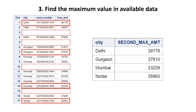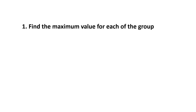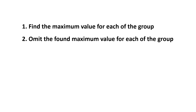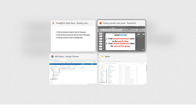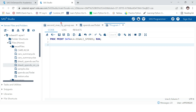The third step is find the maximum value in the available remaining data. Then you can populate the summary. So to summarize: step one — find the maximum value for each group; step two — omit the found maximum value for each group; step three — find the maximum value in the remaining data. Let's jump to SAS and see how we do this.